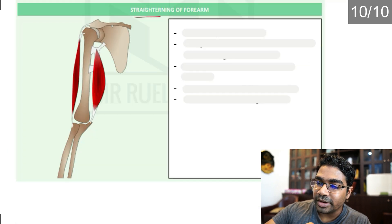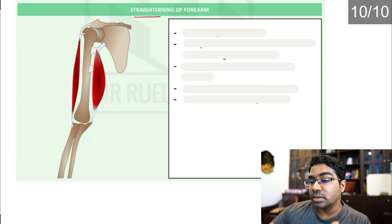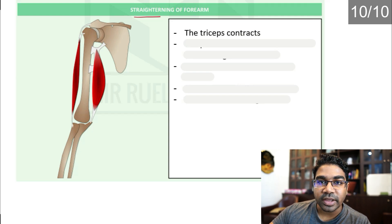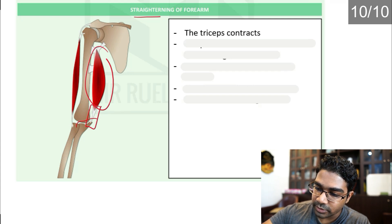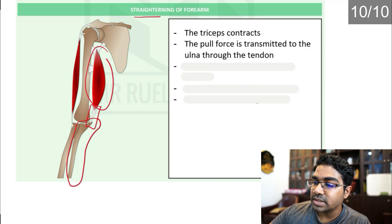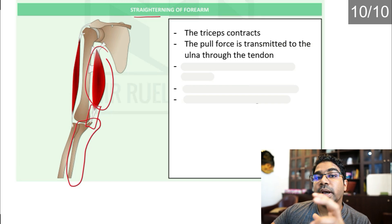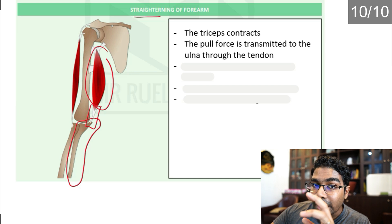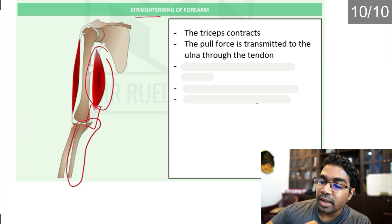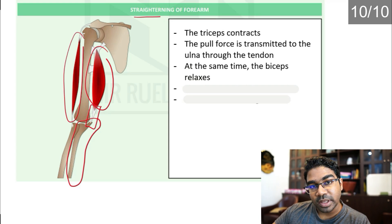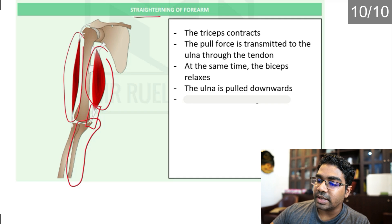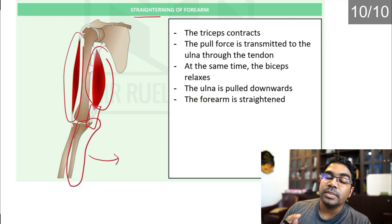For the straightening of the forearm, the opposite occurs. The triceps contracts, and the pull force is transmitted to the ulna through the tendon. At the same time, the biceps relaxes because they are antagonistic muscles. The final effect is that the ulna is pulled downwards and the forearm is straightened.